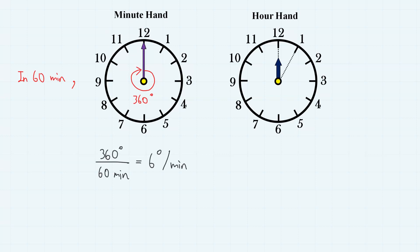Next, the hour hand. In one hour, the hour hand only moves by this much, which is 30 degrees. In other words, the hour hand rotates 30 degrees in 60 minutes. Therefore, it rotates 0.5 degrees per minute.